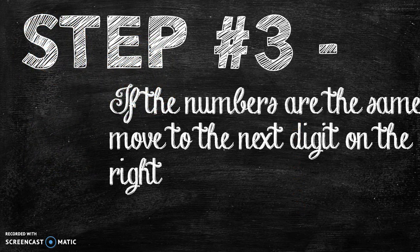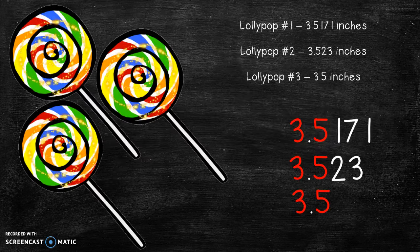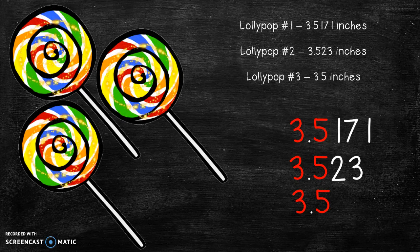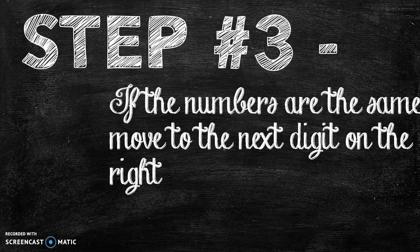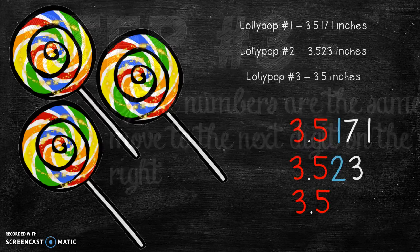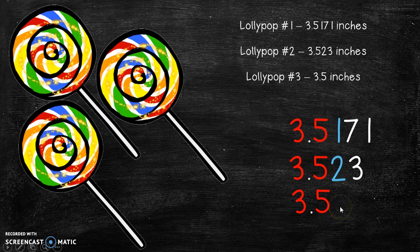Well step number three, if the numbers are the same, move to the next digit on the right. So we're gonna move to the next digit to the right and uh-oh those are all fives. Now what do we do? Again go back to step number three, if the numbers are the same move to the next digit on the right. So now we have a one and a two and uh-oh that bottom number doesn't have a digit. So what do we do now?